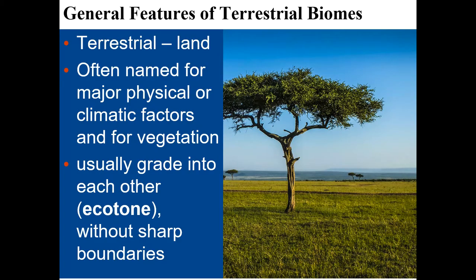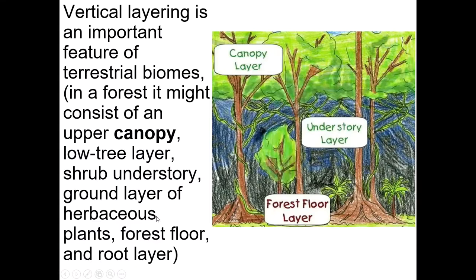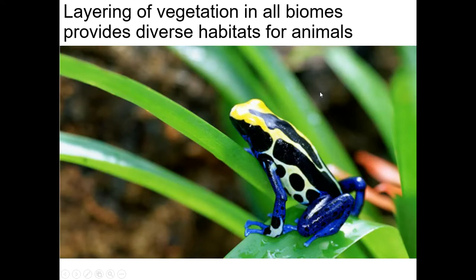We'll talk about terrestrial biomes compared to aquatic biomes. A terrestrial biome is one that's on land — terrestrial means land, and that's vocab you should definitely know. Biomes tend to grade into each other. Regarding vertical layering: the canopy layer is high up in the trees, and sometimes there are trees that go above even that.